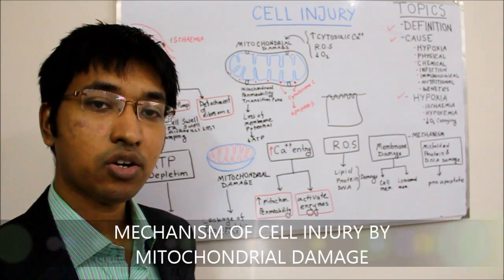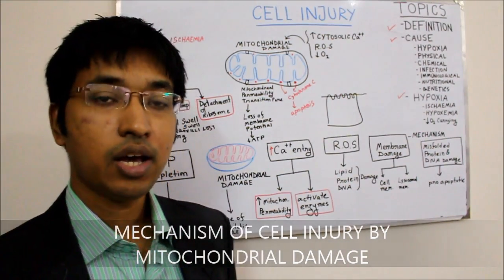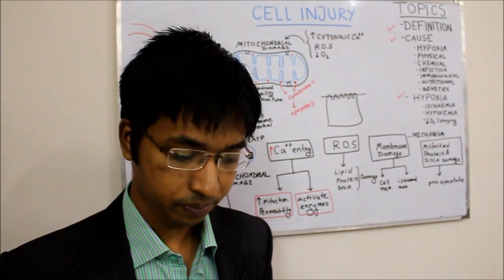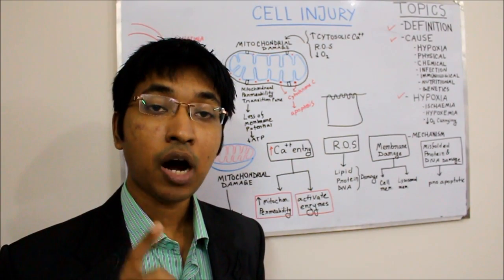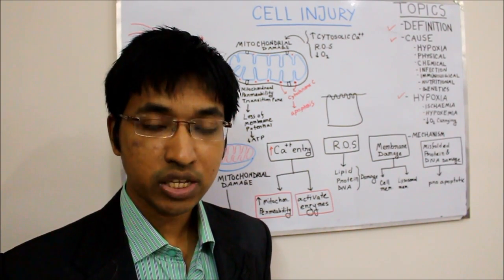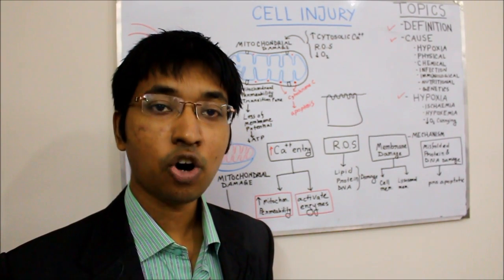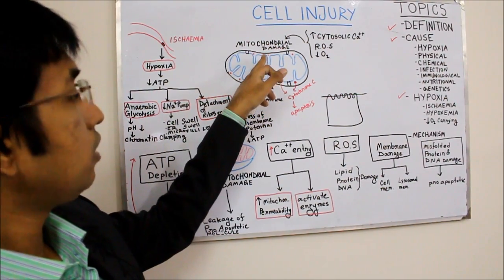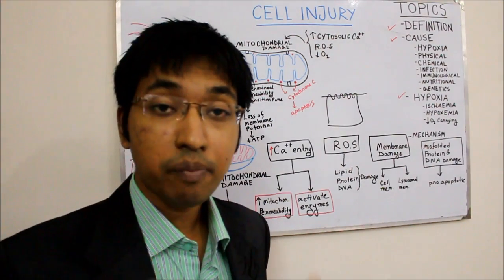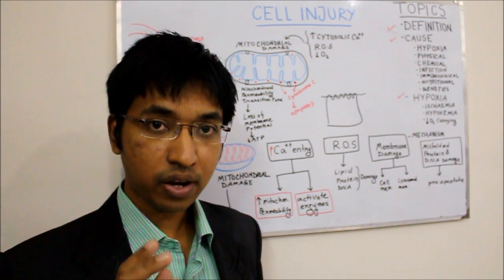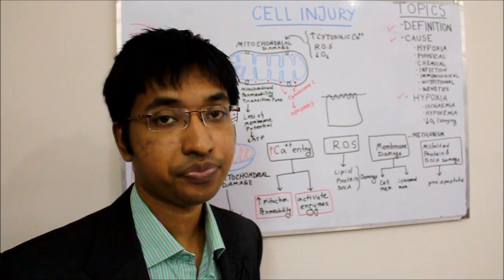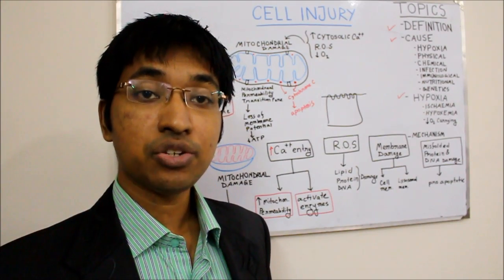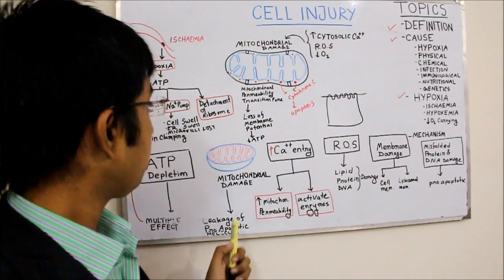The second mechanism by which cell injury can occur is via mitochondrial damage. The function of mitochondria is to generate ATP — it is the powerhouse of the cell. The energy needed for all cell functions in the form of ATP is generated on the inner membrane via the electron transport chain and oxidative phosphorylation. Whenever there is mitochondrial damage, ATP production will get reduced.